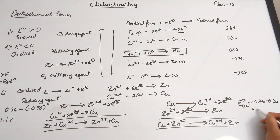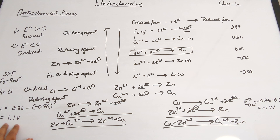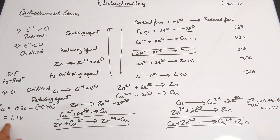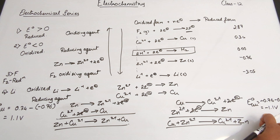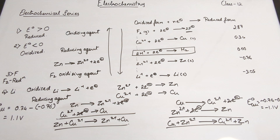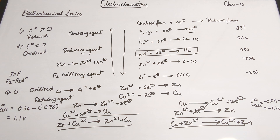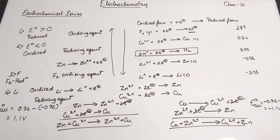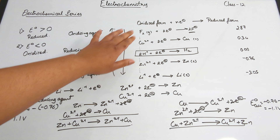For example, in Daniel's cell we have two half-reactions: Zn²⁺ + 2e⁻ → Zn and Cu²⁺ + 2e⁻ → Cu. If zinc is the anode, it will be Zn → Zn²⁺ + 2e⁻ (oxidation), and Cu²⁺ + 2e⁻ → Cu (reduction). The net reaction is: Zn + Cu²⁺ → Zn²⁺ + Cu.